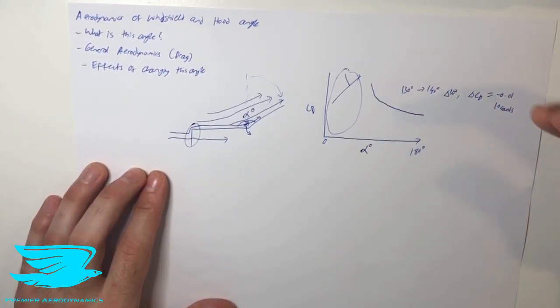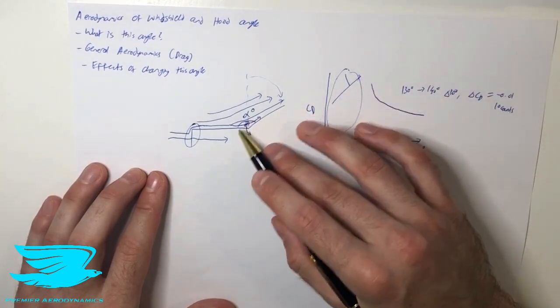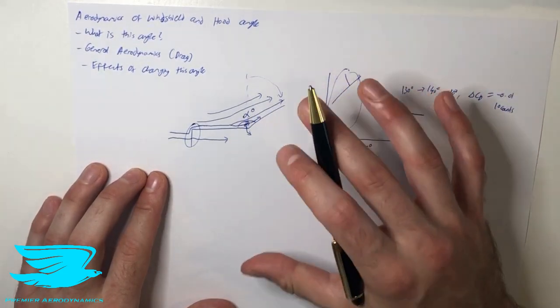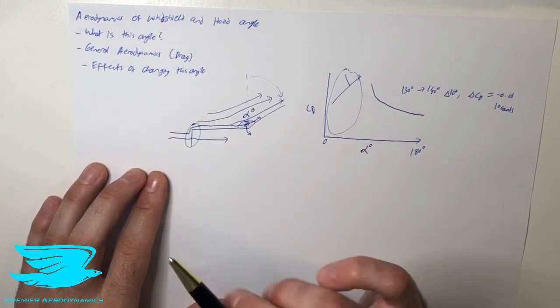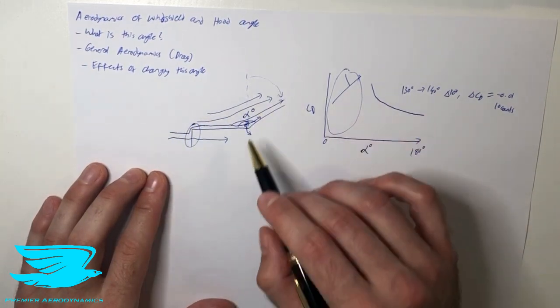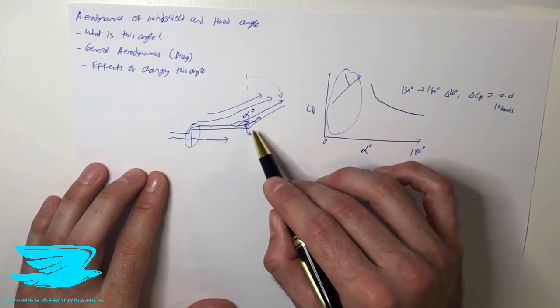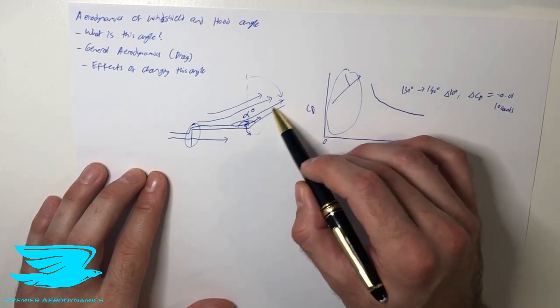Again, that is a decent amount but not nearly as much as what you may think based on how important this zone you may think it is. The hood and the front part that we covered in previous videos are significantly more important than this angle here, predominantly because of this cooling flow coming down.